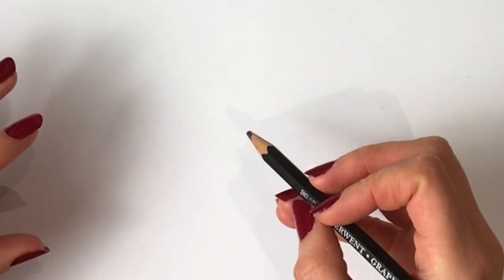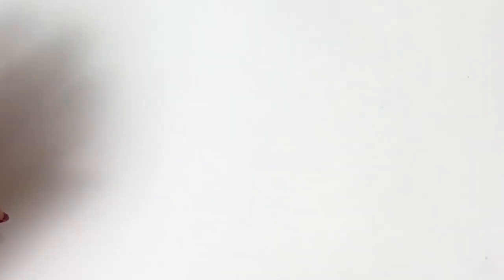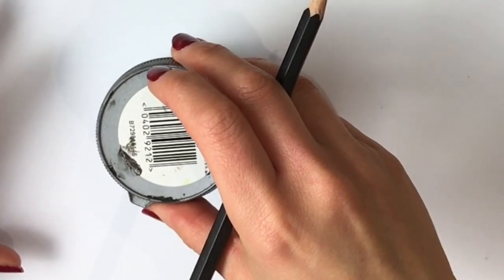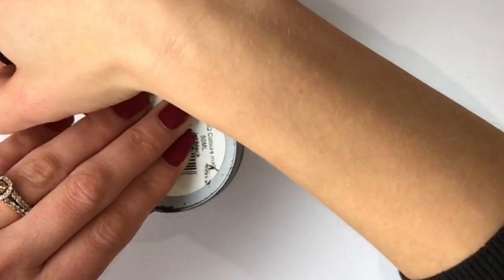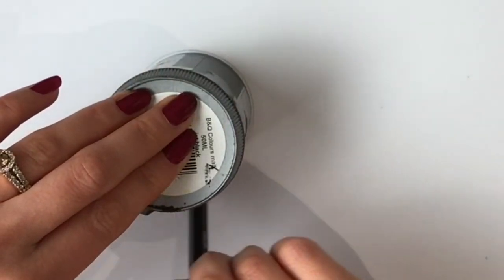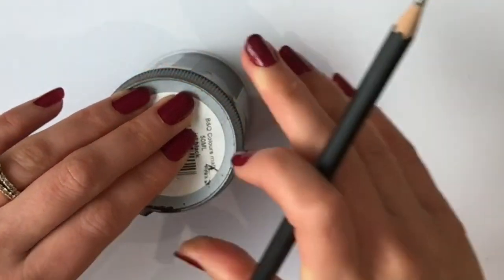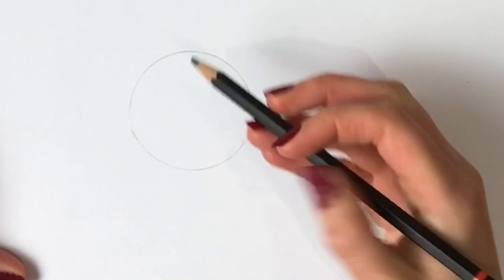So first of all we're going to start off with a circle in the center of the page. Now you can draw this freehand, or I'm just going to use this old pot of paint that I've got or something of a similar size. So just draw around it very lightly, and now I'm going to cut it in half.